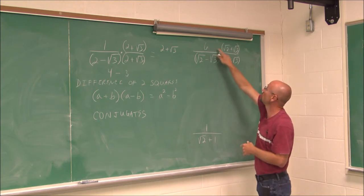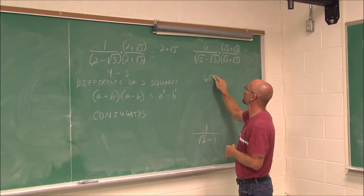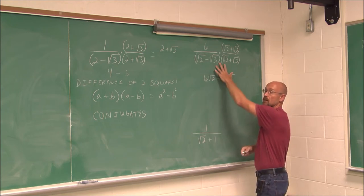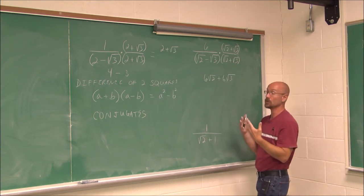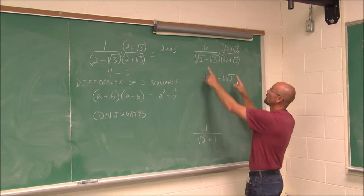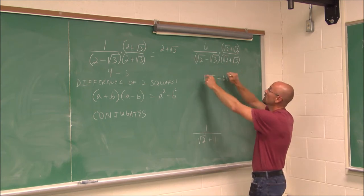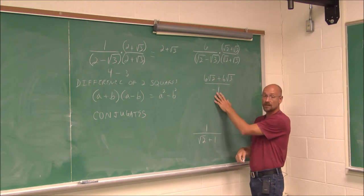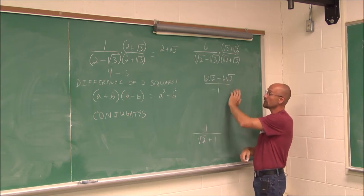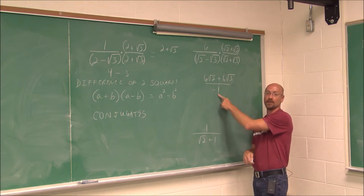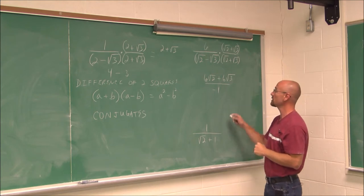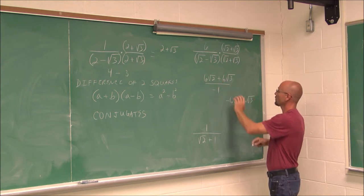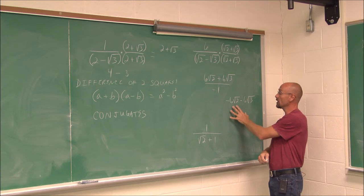I'm going to distribute and get 6√2 + 6√3 — nothing I can really simplify there. When I FOIL the bottom, because it's the difference of squares, I just square the first term minus the square of the second term. The first term squared is 2 — it gets rid of that square root. The next term is minus 3. So 2 minus 3 is negative 1. In the last example it was positive 1, so it was simple. But here there's a negative — we can't leave a negative in the denominator. Dividing by a negative simply changes the sign, giving −6√2 − 6√3. No more radical in the denominator.